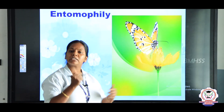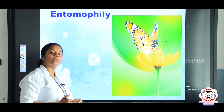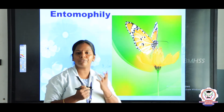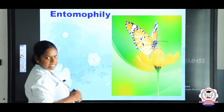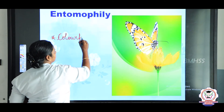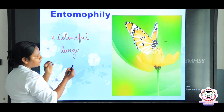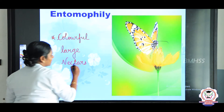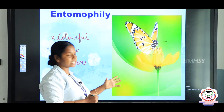Now we are going to discuss the characteristics of entomophilous flowers — flowers which are pollinated by insects. To attract the insects, the flowers should be colourful, attractive, and large. They should also possess nectars, because nectar will be the reward to the insects which visit the flowers. So it should possess nectar glands.